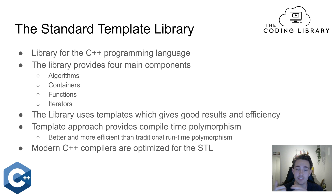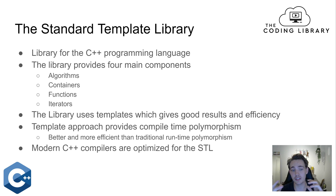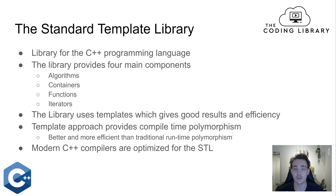The library provides four main components: algorithms, different kinds of containers that we can store data in, methods and operations on those containers, and functions already built into the standard template library. It also uses iterators where we can iterate through our containers to find things like the maximum element, and a lot of other stuff which we'll see an example of later in code.